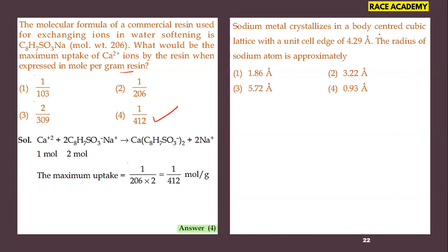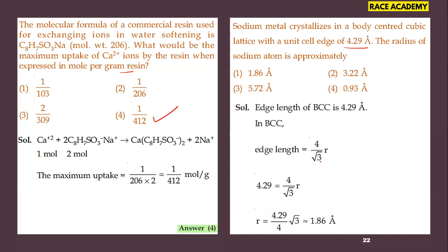Next: sodium metal crystallizes in a body-centered cubic lattice with a unit cell edge of 4.29 angstrom units. The radius of the sodium atom is approximately how much? For BCC, the edge length to radius relation is R = √3A/4. Substituting, we get 1.86 angstrom units for sodium metal. So the first option is the right answer.